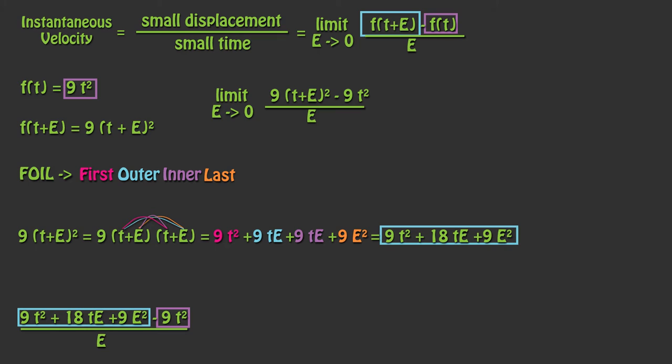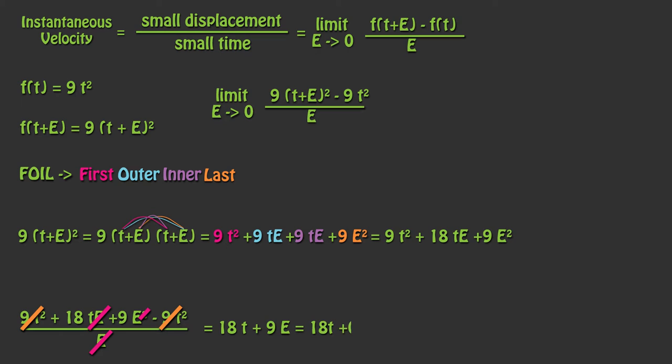Multiply out the 9 and we can cancel out some terms. The 9t squared goes away and we can divide by the incremental e. This leaves us with 18t plus 9e. And since e is approaching 0, anything that is multiplied by 0 is, well, 0. This means we can eliminate the 9e term. This leaves us with 18t.